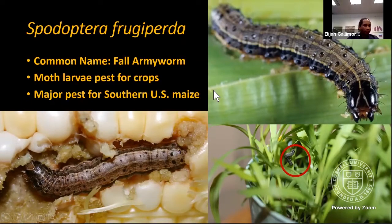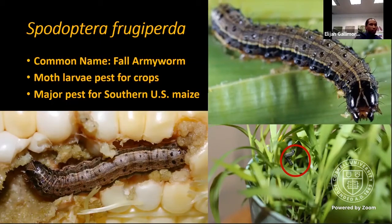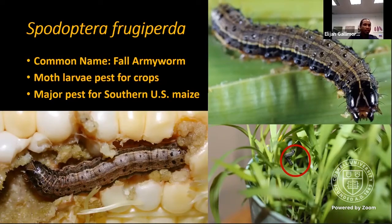So what's Spodoptera frugiperda? Spodoptera frugiperda, more commonly known as the fall armyworm, is a notorious agricultural pest. This moth larva has been chosen for the project because it causes major economic losses for crops, including but not limited to rice, cabbage, tomato, and most notably maize across the southern United States.